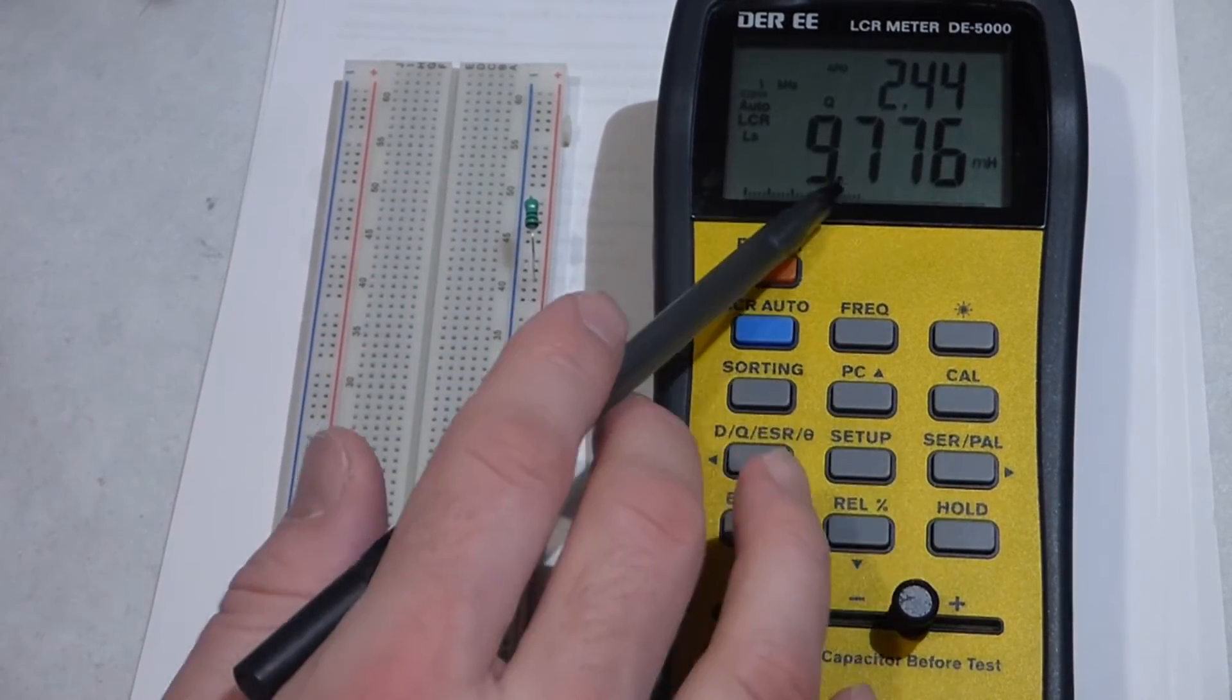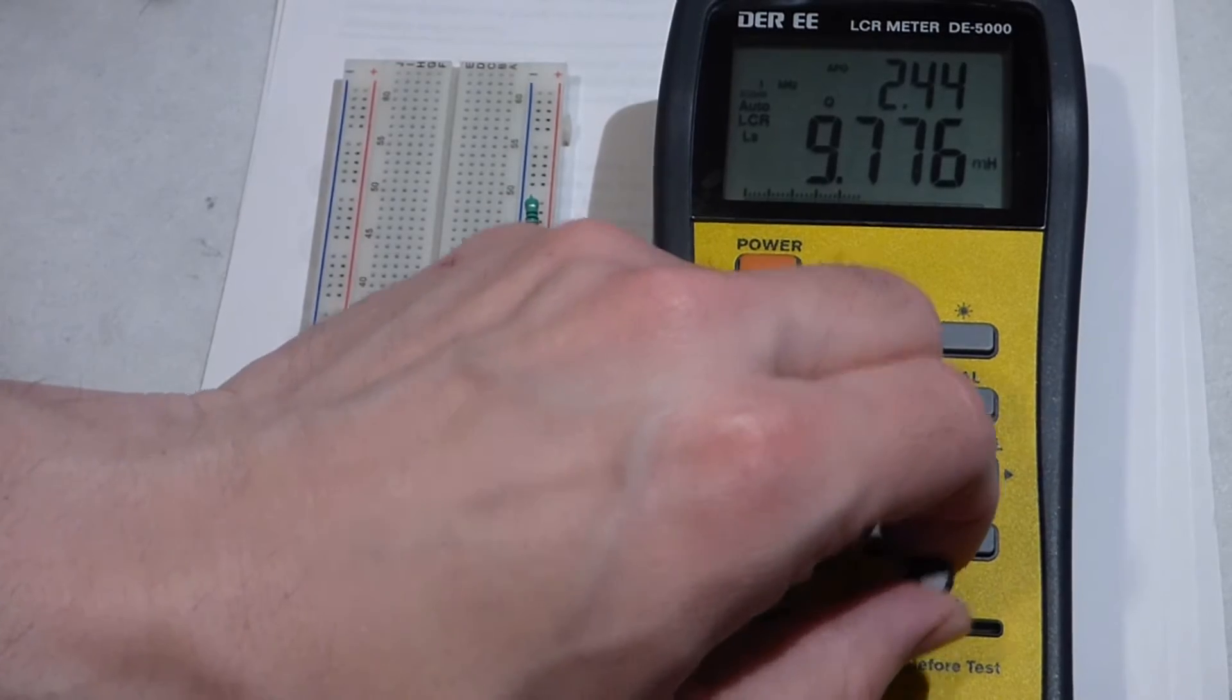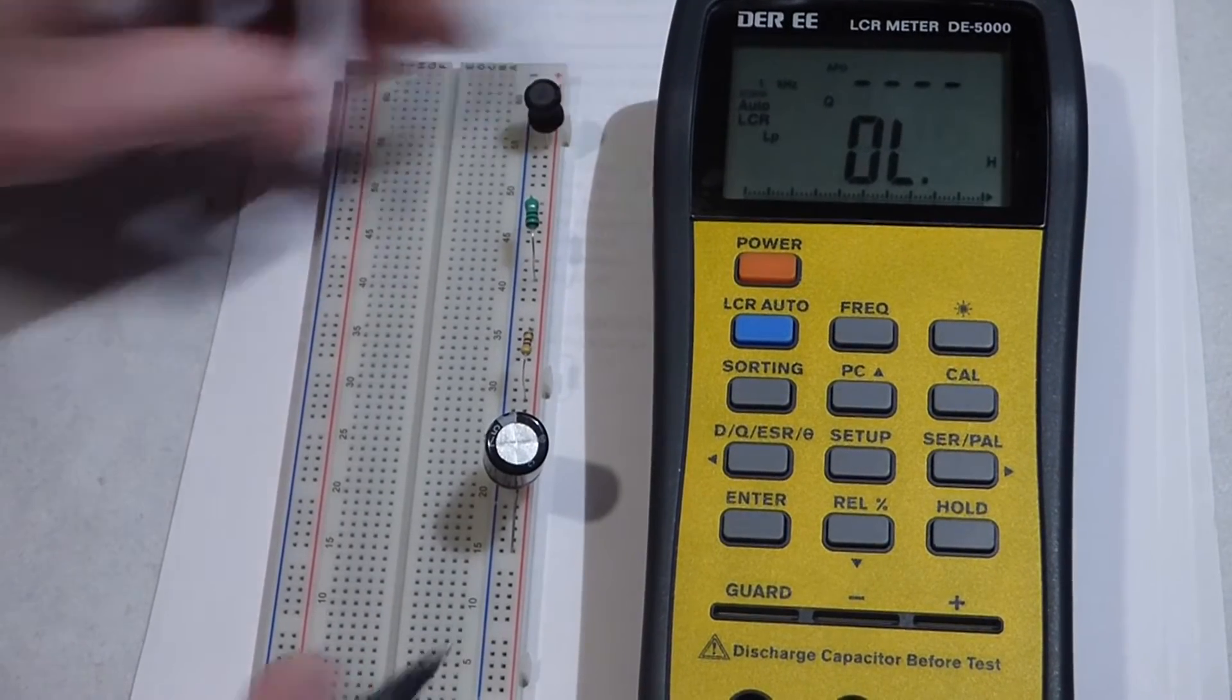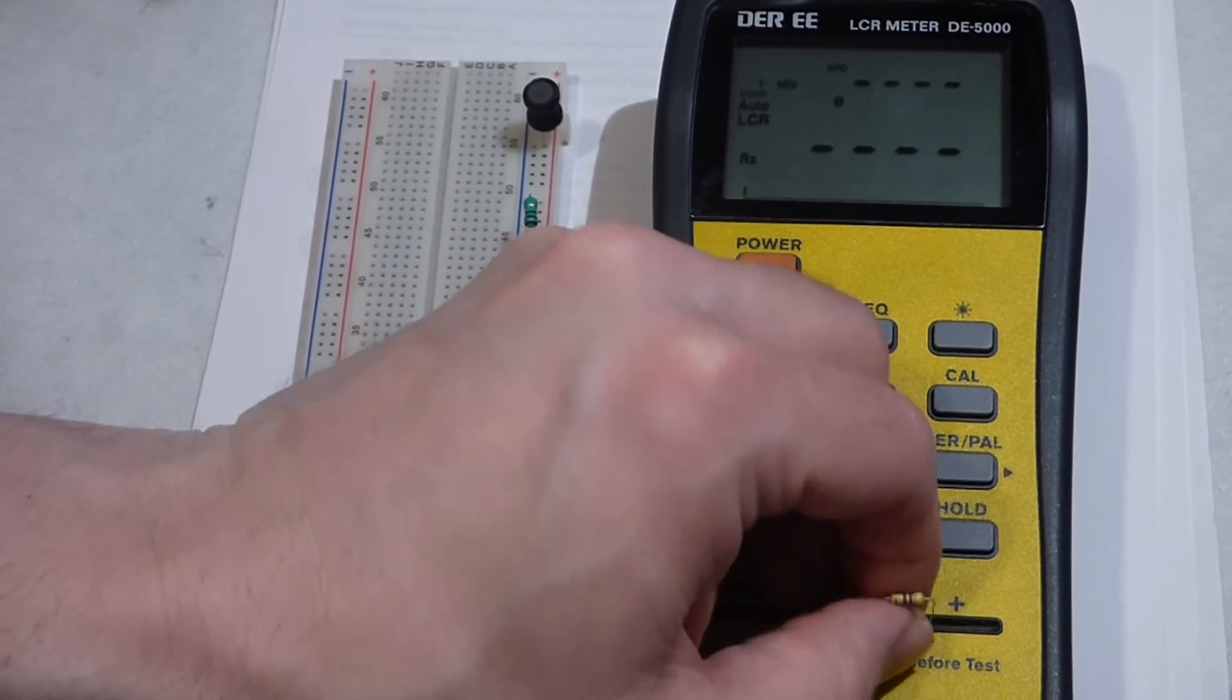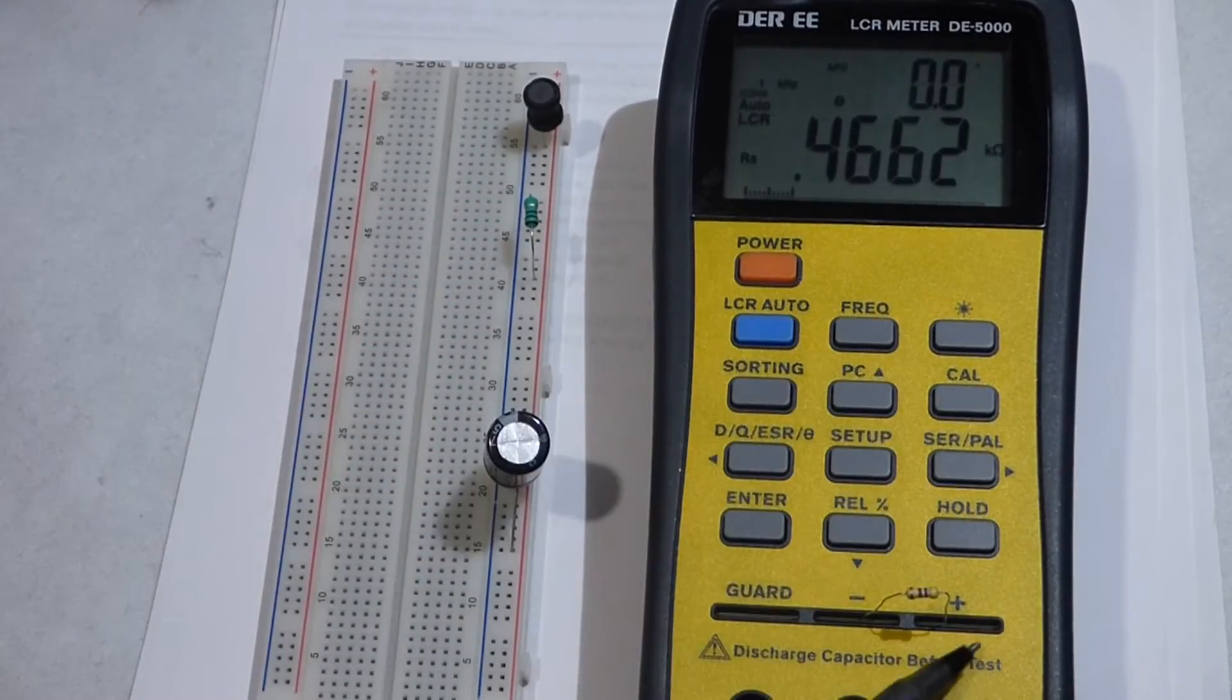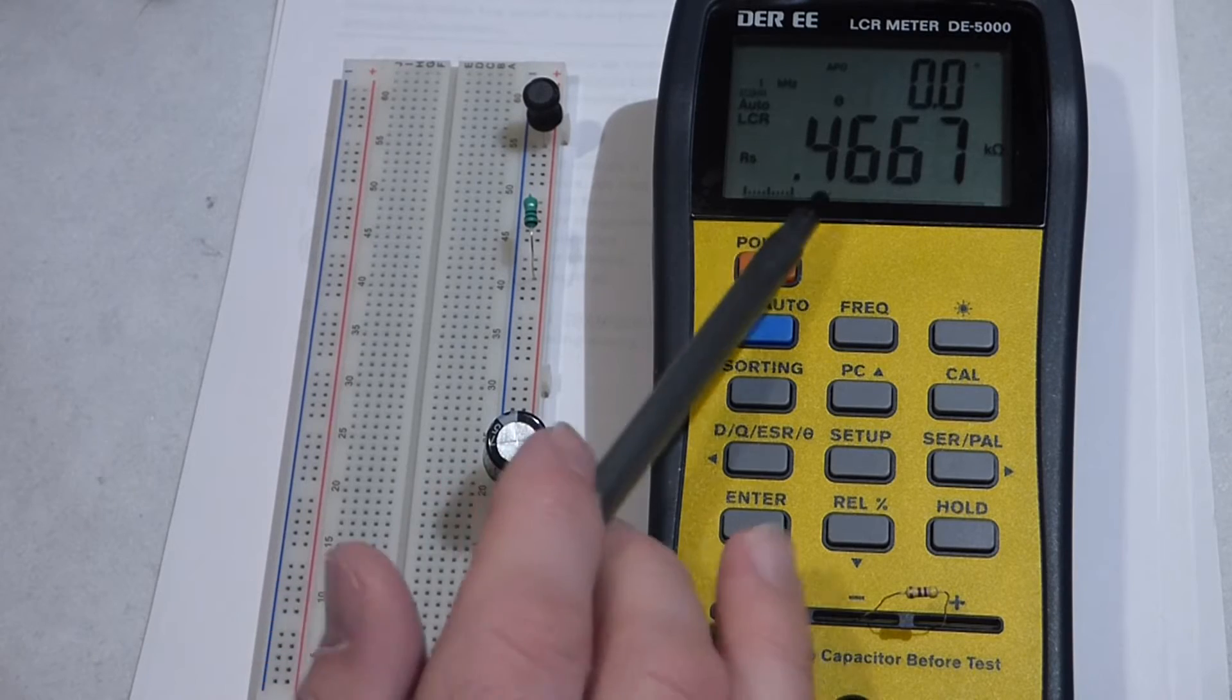That showed us the henries. Now if I take a resistor - this is a 470 ohm resistor - there we go. There are a couple little metal pieces there that spread apart to hold the component.